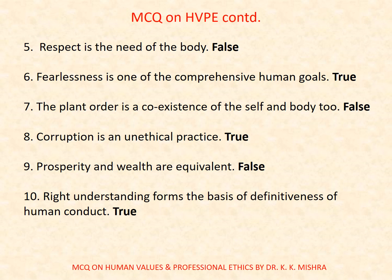Question number five: Respect is the need of the body. False. Question number six: Fearlessness is one of the comprehensive human goals. True. Question number seven: The plant order is a coexistence of the self and body too. False. Question number eight: Corruption is an unethical practice. True. Question number nine: Prosperity and wealth are equivalent. False. Question number ten: Right understanding forms the basis of definitiveness of human conduct. True.